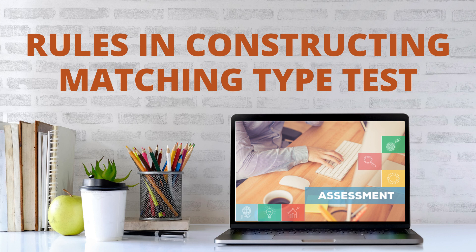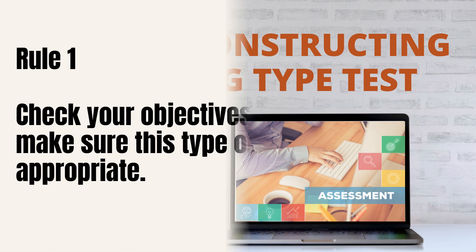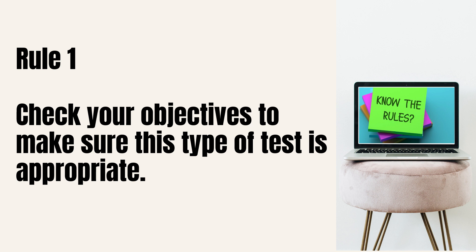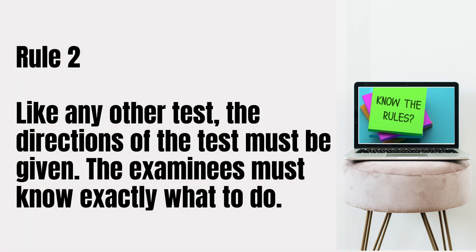Here are the rules in constructing a Matching Type test. Rule number one: check your objectives to make sure this type of test is appropriate. It is very important to go back to your objectives to confirm it really matches your chosen type of test. Remember, assessment should be aligned to your objectives. Rule number two: like any other test, the directions must be given. The examinees must know exactly what to do, so make sure your directions or instructions are clear.